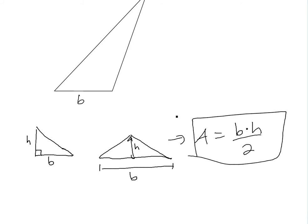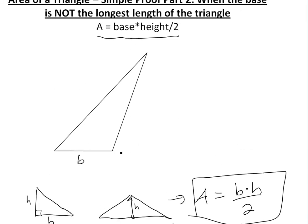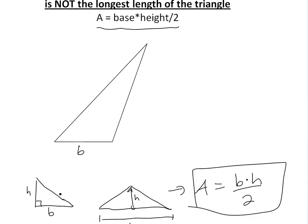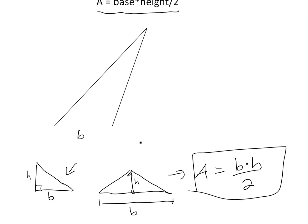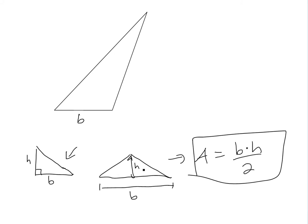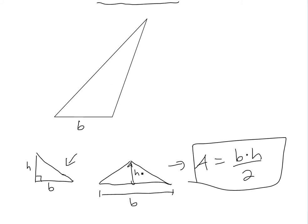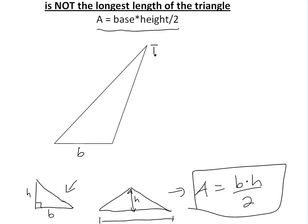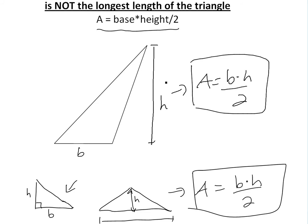But now I'm going to show the proof for when you have a case where it's not a right-angle triangle and the base is not the biggest side. You can see the proof for those two cases in the video link below. I'm going to show that if this is h, then the area is also equal to b times h divided by two. And to show the proof for this one, it's pretty simple, actually.